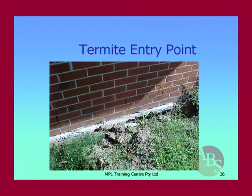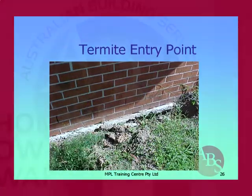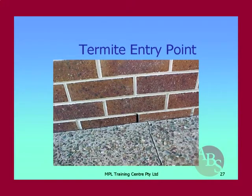Australian Standard AS 3660.1 talks about the edge of the concrete slab being smooth, off the form, and continuous. Where that's not the case, termites can gain undetected entry because of all the irregularities in the concrete. Concrete slabs covering weep holes are the number one spot for termites. We've had to cut concrete away up to 300mm just to install extra barrier or at least create a buffer zone so we can inspect the area before termites gain entry again.